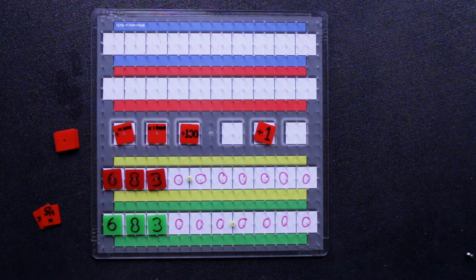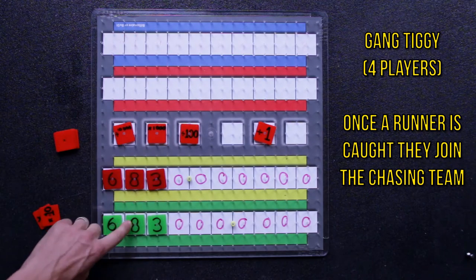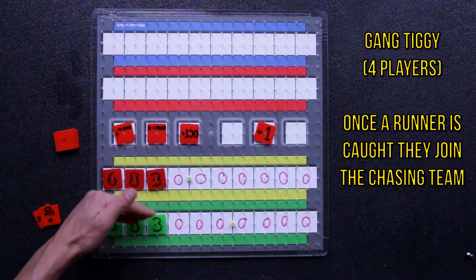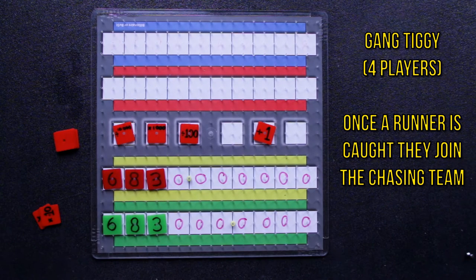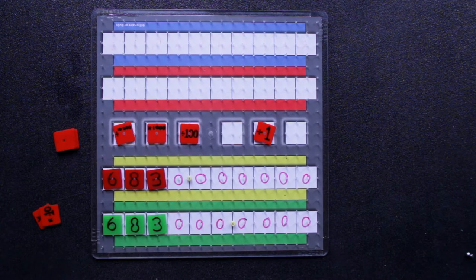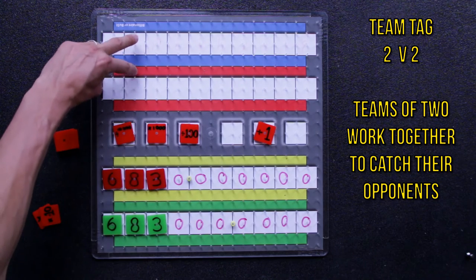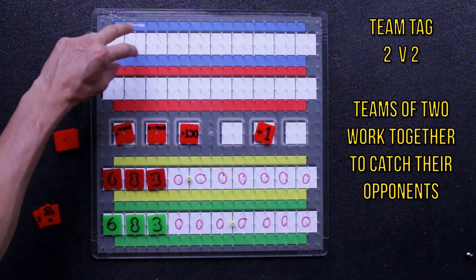Like gang up tiggy, where there's four players and the chaser, once they've caught someone, the person who's been caught joins the chasing team and then they chase the other players until everyone gets caught. Or you can play a game of two on two, so these two players would work together to catch these two, and then these two would see how long they could survive for.